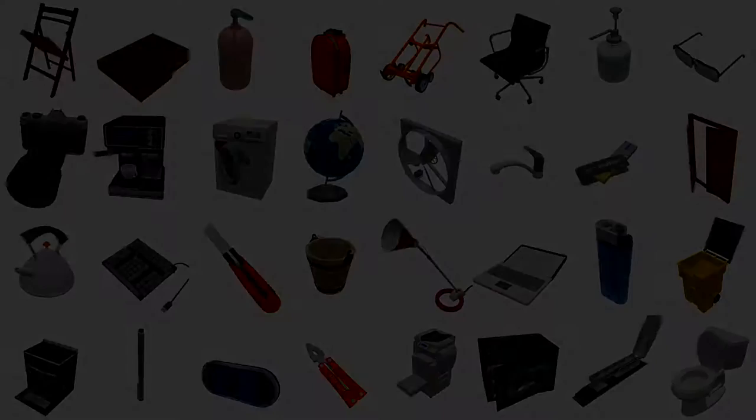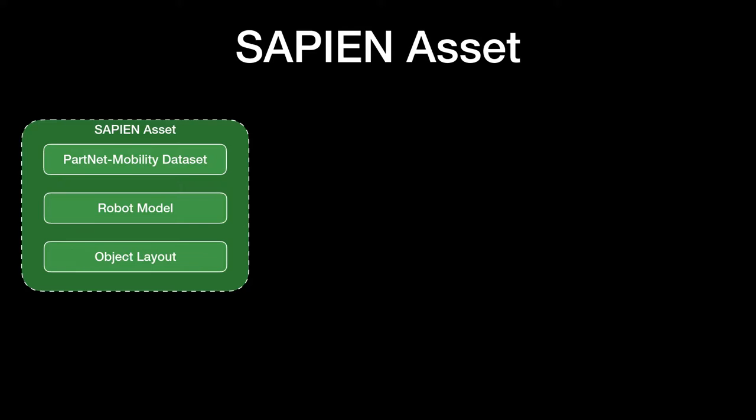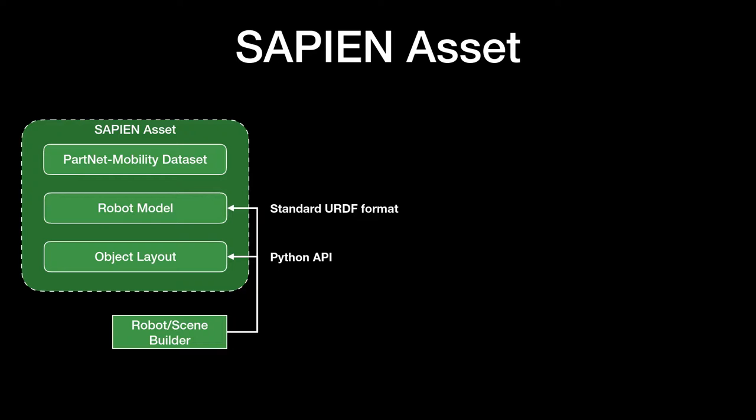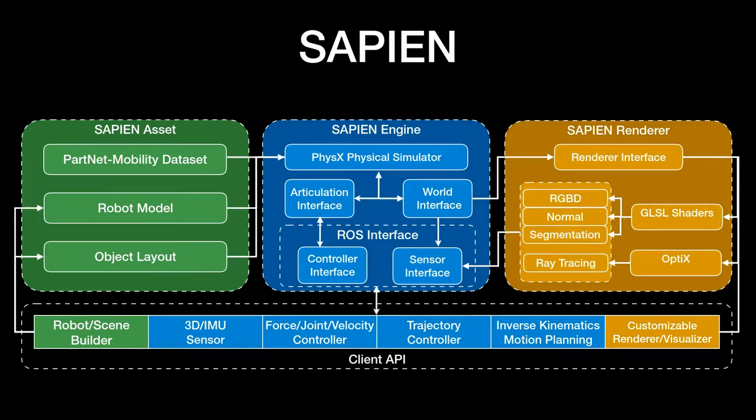Apart from the PartNet Mobility dataset, Sapien allows building robot models and object layouts through standard URDF format and Python API. Combining the physics robotics engine, renderer, and assets, we have the whole architecture of Sapien summarized here.